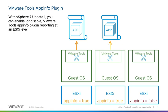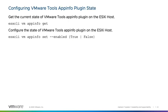Configuring the state for the VMware Tools AppInfo plugin is done using ESXi CLI commands. You can configure the state of the VMware Tools AppInfo plugin at the ESXi level by using the ESXi CLI VM AppInfo Set command.